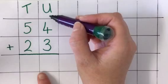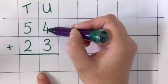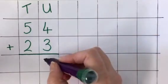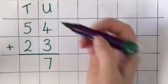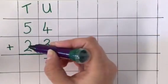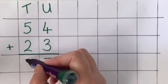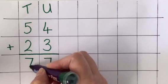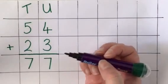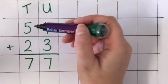So in this case, the units are worth the least. So 4 add 3 is 7, 5 tens and 2 tens is 7 in the tens column. It's important to know that that is 5 tens and not 5.